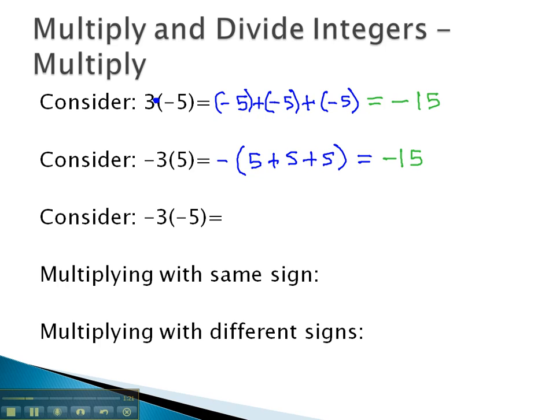We can combine both of these ideas together as we multiply negative 3 times negative 5. This means we have the opposite of 3 negative 5's: negative 5 plus negative 5 plus negative 5. Which means inside the parenthesis here, we've got negative 15, a whole bunch of negatives.